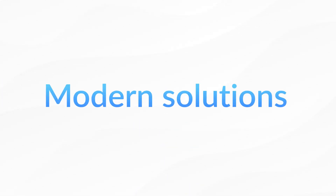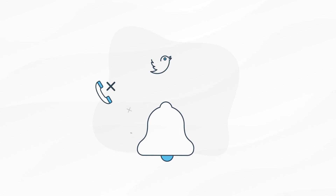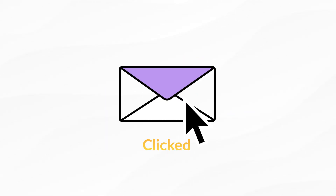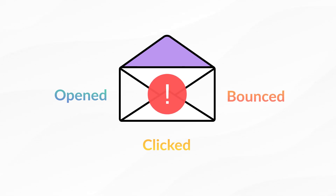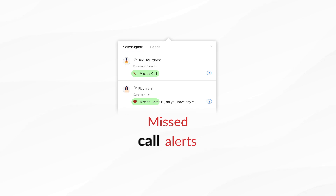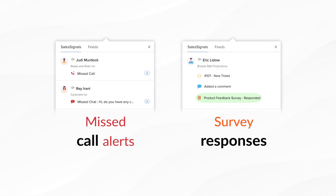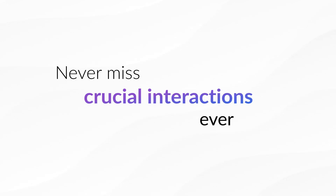We believe modern problems require modern solutions. Signals in Zoho CRM keeps you in the loop, notifying you about emails that have been clicked, opened, and bounced. It even alerts you about missed sales calls and captures valuable survey responses. This means you'll never miss crucial interactions ever again.